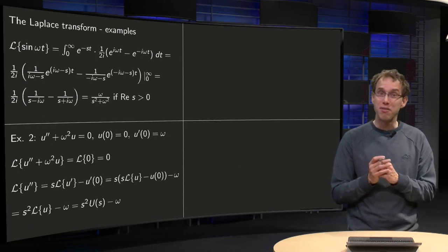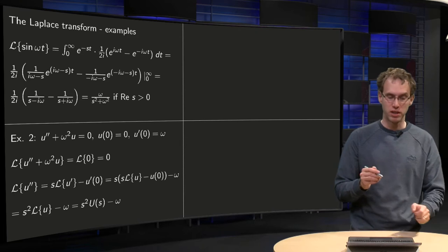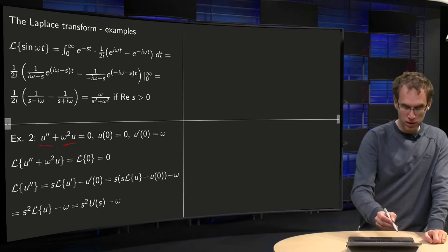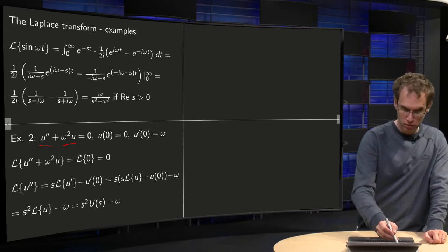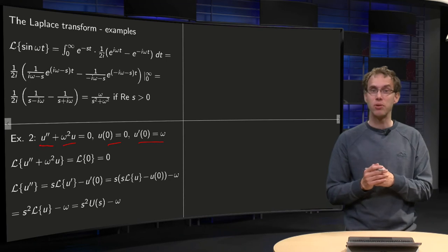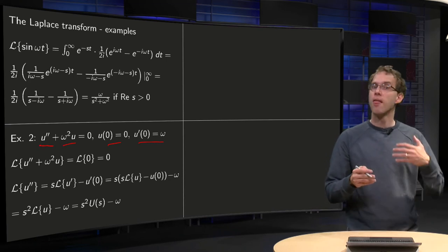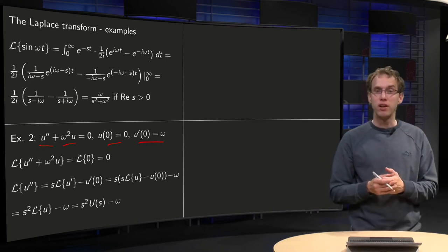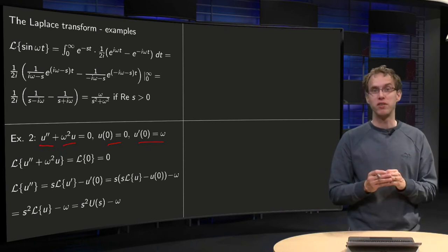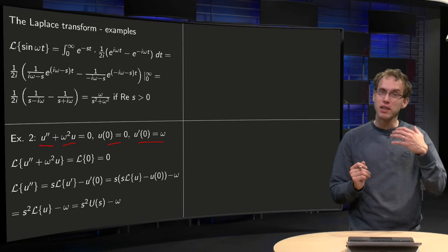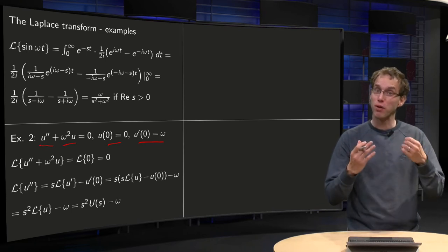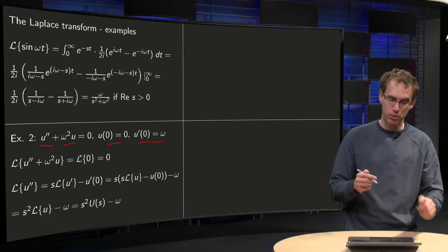Let's try to solve a differential equation now using Laplace transforms. We take u'' + ω²u = 0, with initial conditions u(0) = 0 and u'(0) = ω. This is a second-order linear differential equation. You might have seen it already in the first year. You can solve it with more basic techniques, but let's apply the Laplace transform to see how it works.